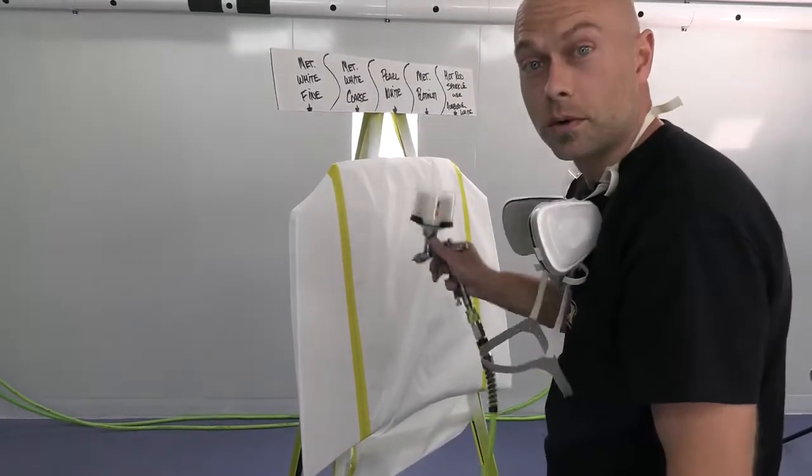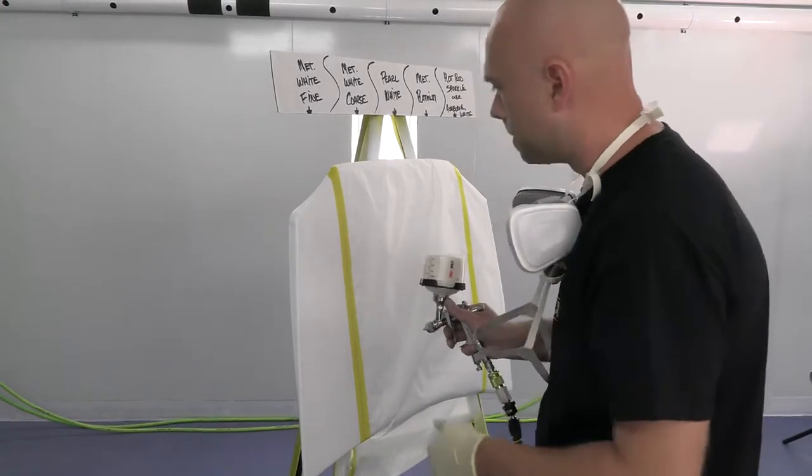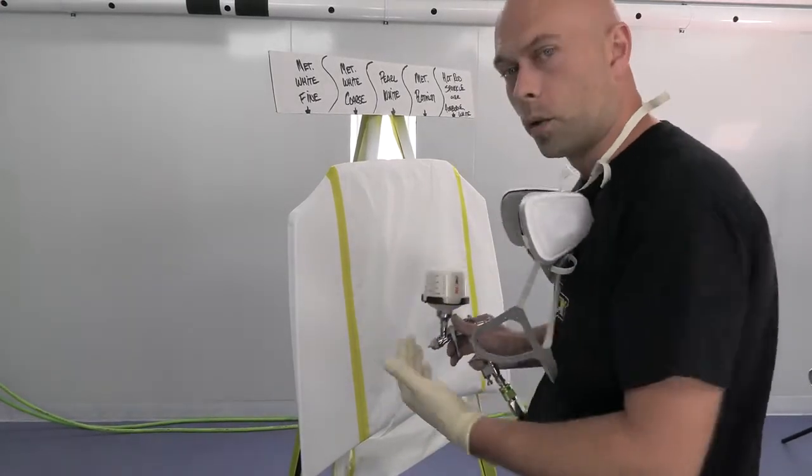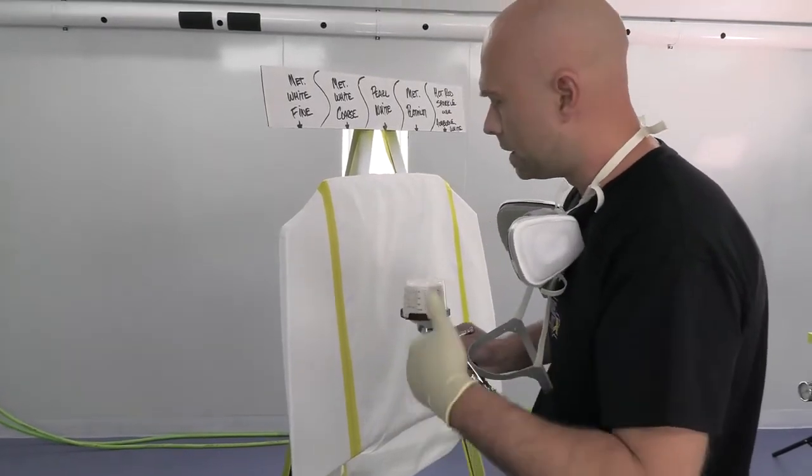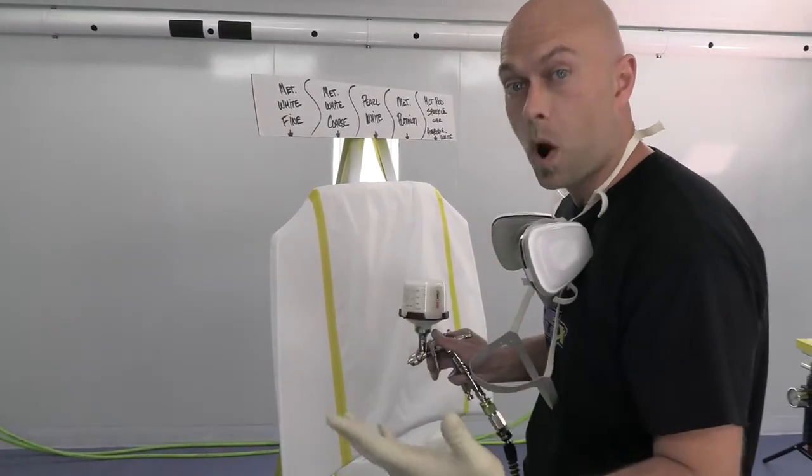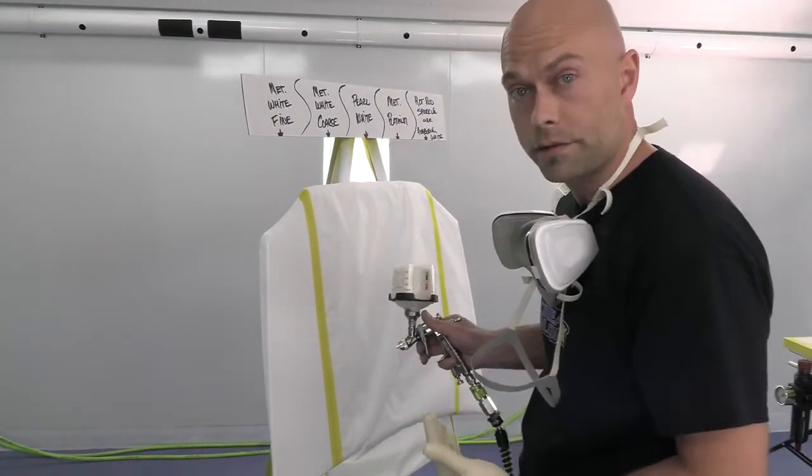Believe it or not, that's one coat. And that's the beauty of going over a sealer white. You do all the hard work with your sealer. It should take two coats of white, metallic white, over that. In this case, the metallic white fine.